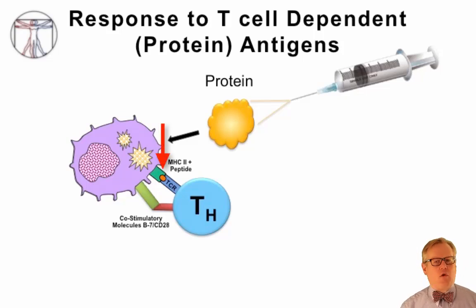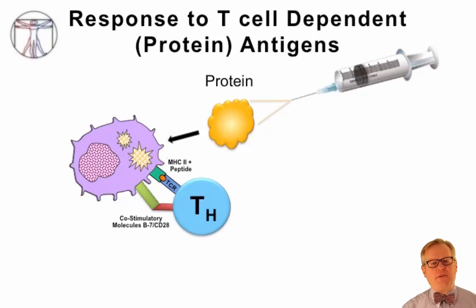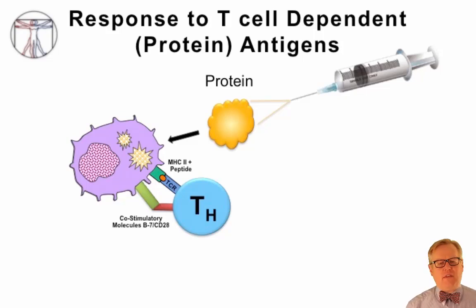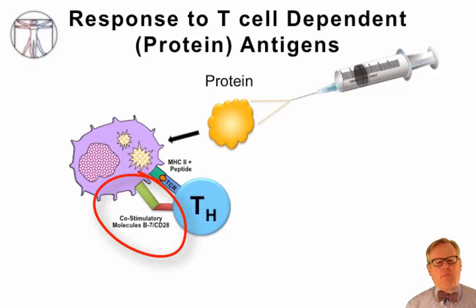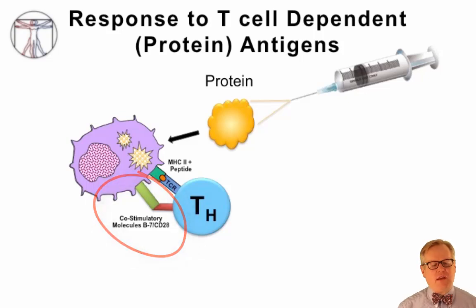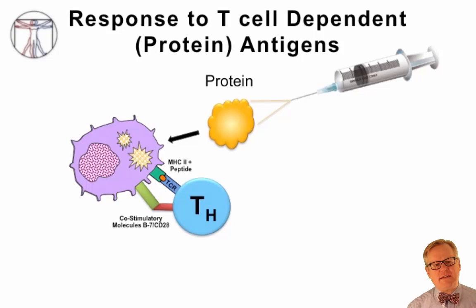The antigen presenting cell shows those pieces to CD4-positive helper T-cells that recognize those peptides in the context of the MHC class II molecule, and this activates the T-cells. Activation occurs because of stimulation through the T-cell receptor and co-stimulatory molecules, including B7 molecules on the antigen presenting cell and CD28 on the T-cell, acting together to activate the T-cell.